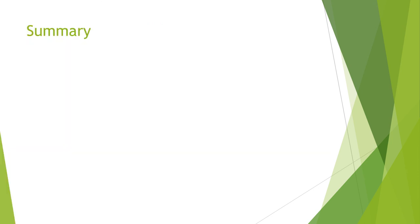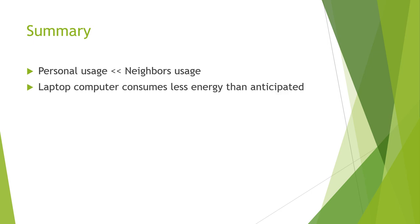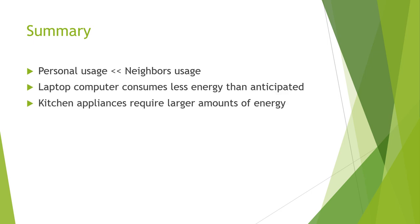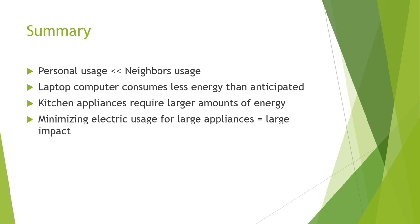In summary, I've learned that my personal usage is significantly less than my neighbors' usage. Although this may be skewed considering others have roommates and I live alone, I was still within the efficient neighbor range when I doubled my usage. I also learned that my laptop charger uses a lot less energy than I originally anticipated, and kitchen appliances require larger amounts of energy than expected. With this knowledge, I can be more mindful of when I'm using kitchen appliances and reduce cooking time where possible. Minimizing the electric usage of larger appliances has a larger impact, and I hope to implement this specifically in my kitchen appliance usage.